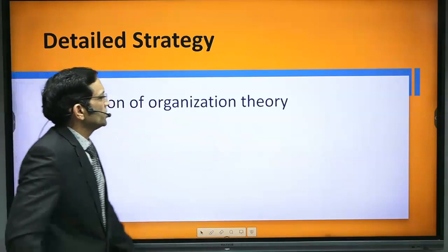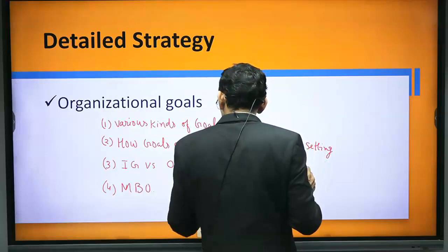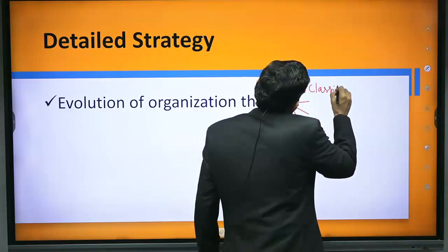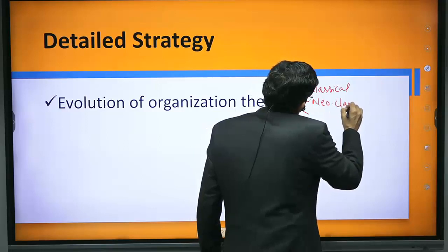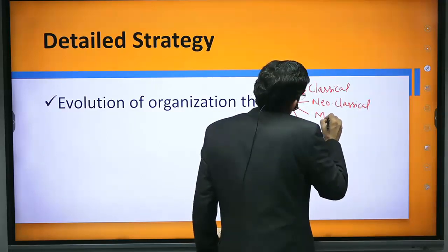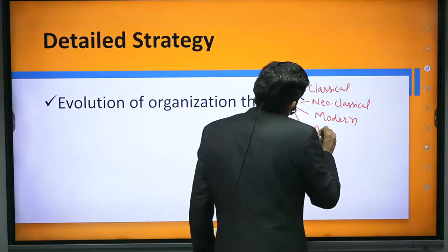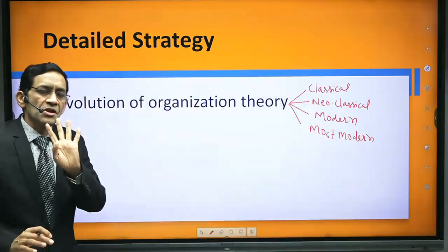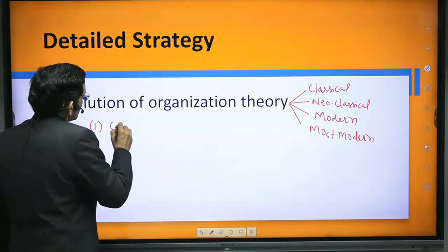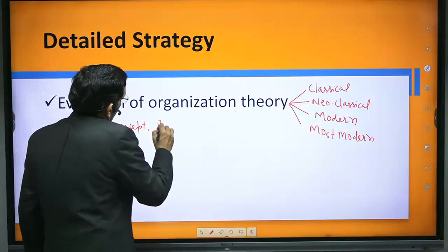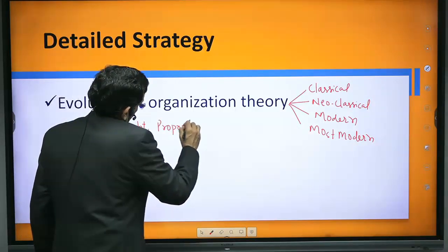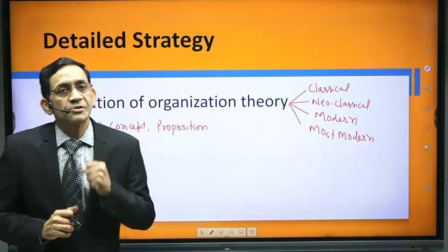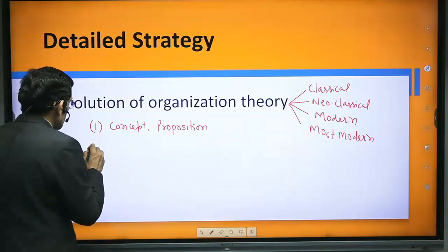Unit three is evolution of organization theory. There are four main thoughts: classical thought, neoclassical theory, modern theory, and most modern theories. With regard to these theories, you should prepare three important things. First, the concepts covered in the theory and its main proposition — the core idea. For example, for scientific management, the core proposition is the one best way of doing work, along with its techniques and principles.